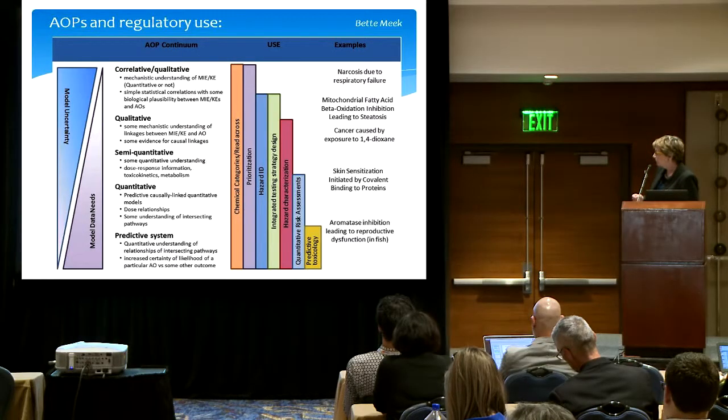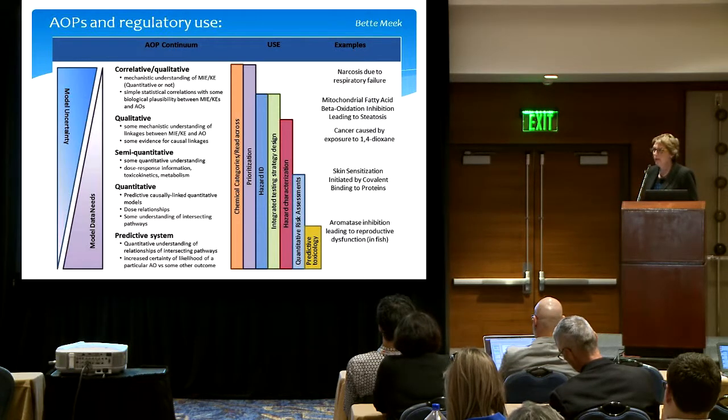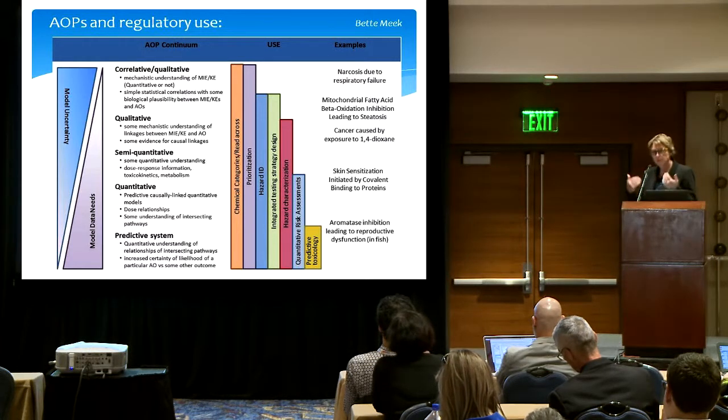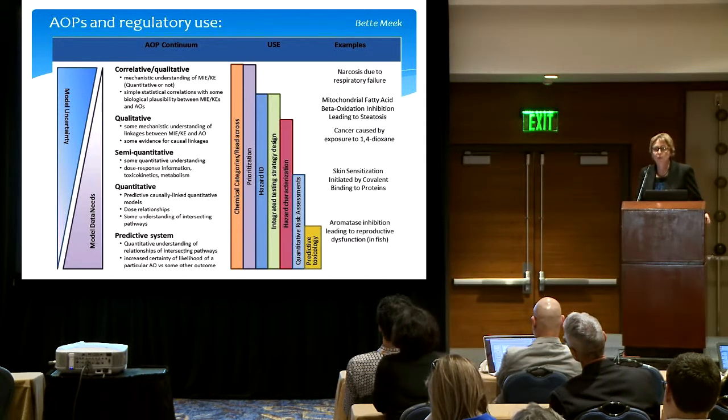An AOP at any stage of development can be helpful in any decision. But if you're making a decision with high consequences and you have an AOP with low certainty or low information, you will need a lot of other supporting information — you can't rely entirely on the AOP. In the right-hand column are some examples of pathways currently at different stages. As time goes on, this will all change — the more information you have, your pathway evolves over time. There is no done AOP; pathways or networks will just continue to improve.